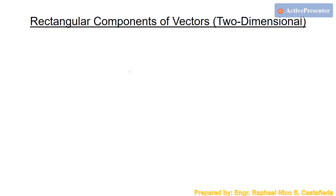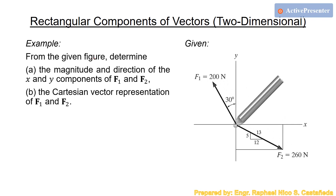Now let's work through an example. I strongly suggest pausing to try the problem yourself before comparing your answers. The problem gives two forces: F1 has a magnitude of 200 newtons with its angle measured from the positive y-axis, and F2 has a magnitude of 260 newtons with its direction given by a slope.